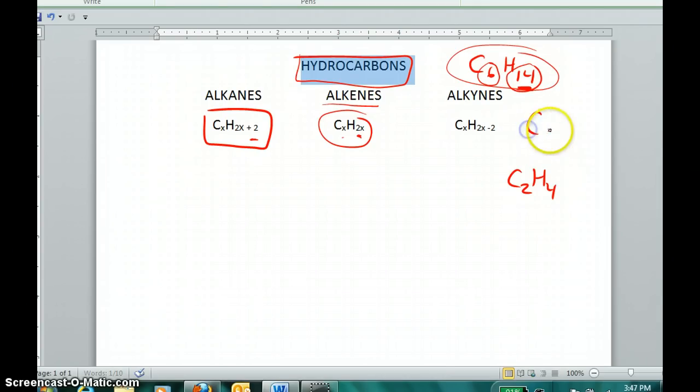On the other hand, if I saw this chemical formula for a hydrocarbon, well, two times three is six, but if I remove two more and had four, this is a completely different type of hydrocarbon. It has the x to 2x minus 2 ratio of carbon to hydrogen, and it would be called an alkyne.